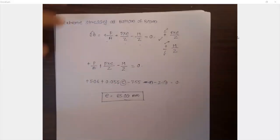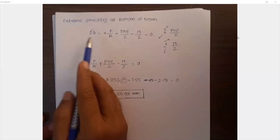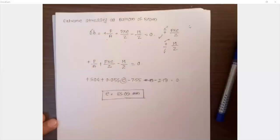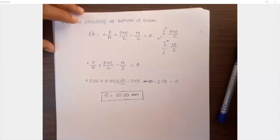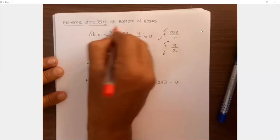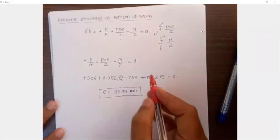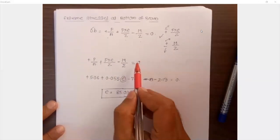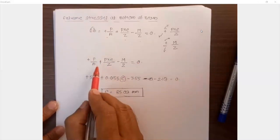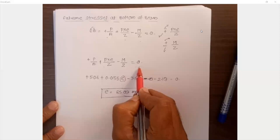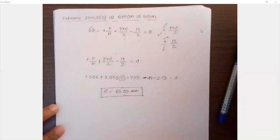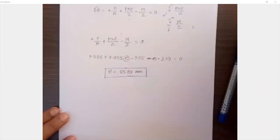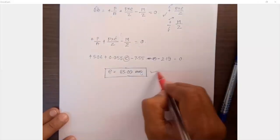Extreme stresses have been calculated. For extreme stresses at the bottom of the beam, they have given us a condition. When the extreme stresses at the edges will be zero, what will be the value of eccentricity? After putting in all the values, we have got the eccentricity value of 85.09 mm. This is the first case answer.